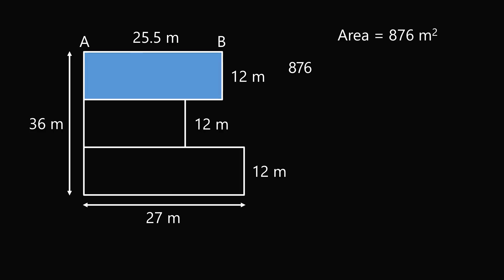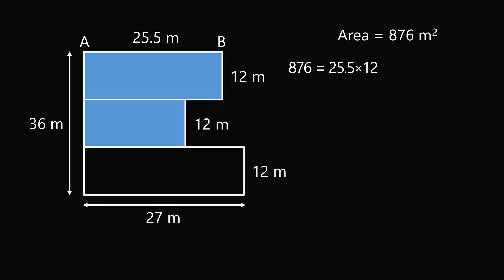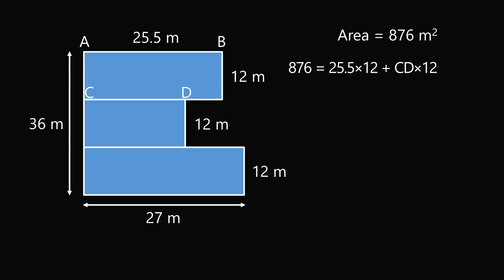So 876 is equal to the area of the top rectangle, that's 25.5 times 12, plus the area of the middle rectangle, let's call this length CD, so we have CD times 12, and finally we have the bottom area so that'll be 27 times 12.